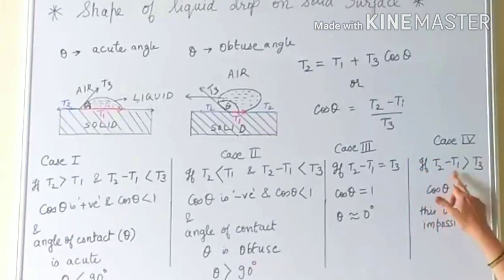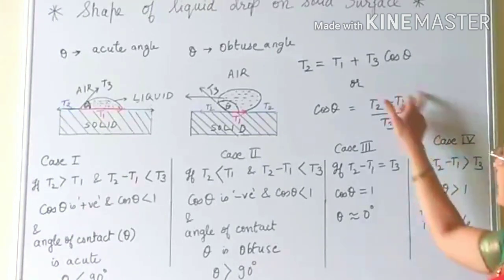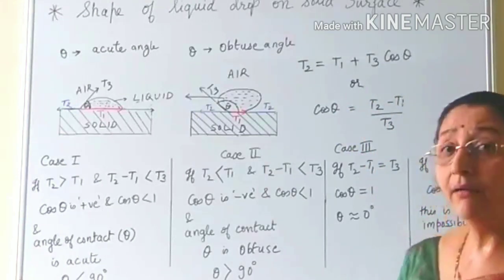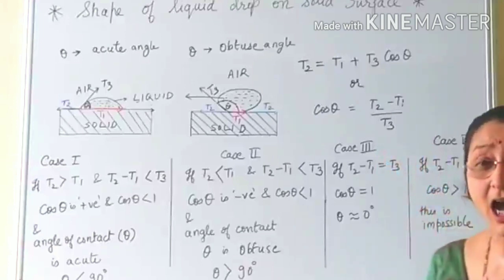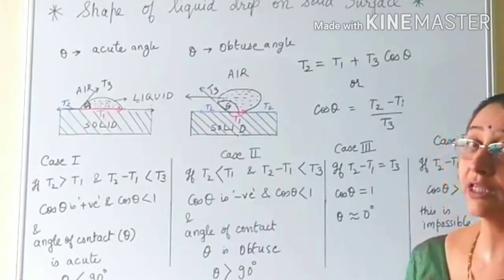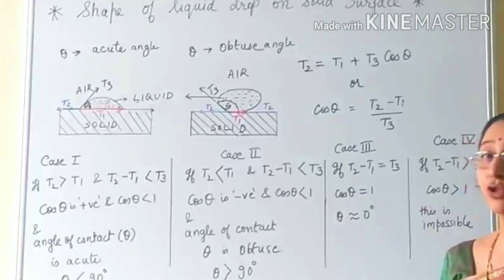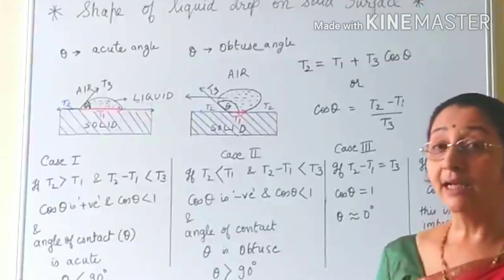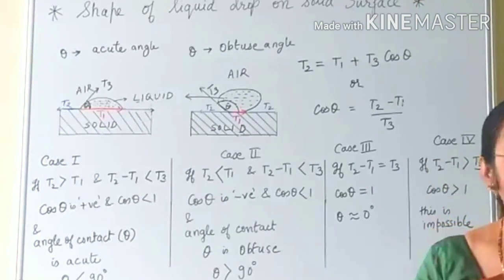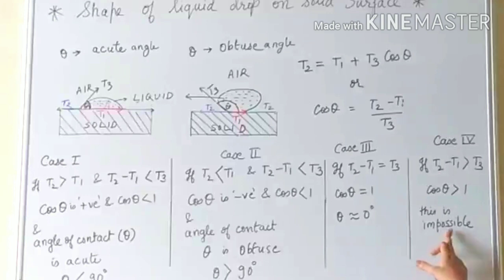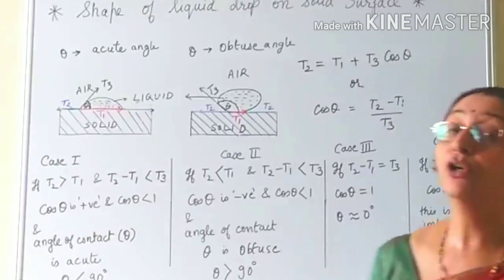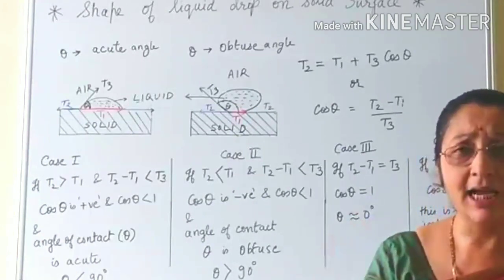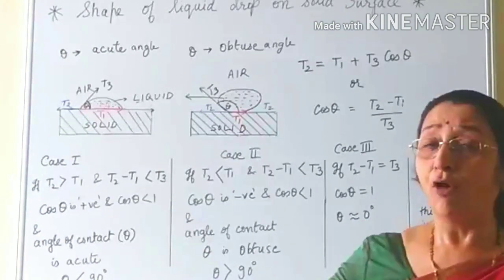Case 4: If T2 minus T1 is greater than T3, then the numerator is greater than the denominator, giving cos θ greater than 1. Since cosine values cannot exceed 1, this case is mathematically impossible. Therefore no drop is formed, and the liquid spreads uniformly over the solid surface.